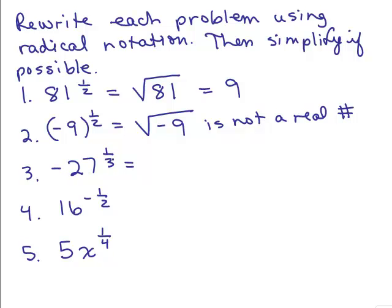How about negative 27 to the 1 third? The minus sign is not in parenthesis, so we are not taking the cube root of negative 27. The minus sign is out in front. The base is only the 27. So the base is only 27, so that's all that goes in the cube root. So we're taking negative the cube root of 27, and that will be negative 3.